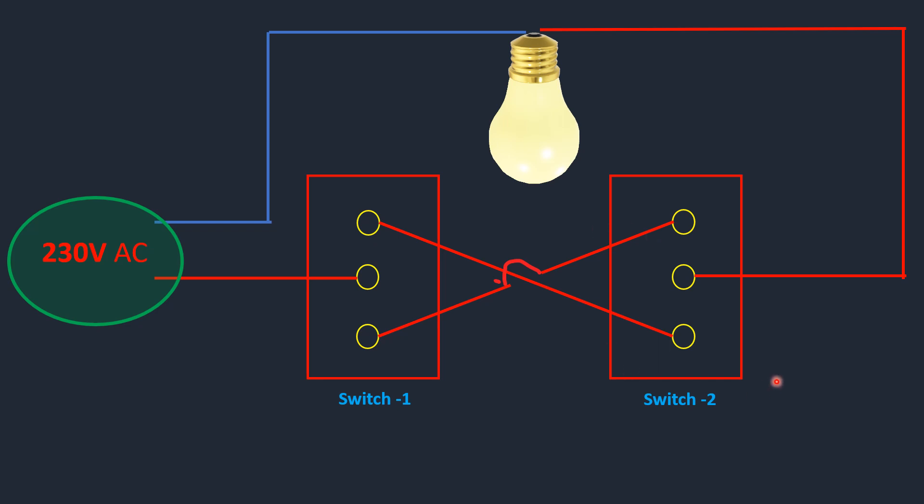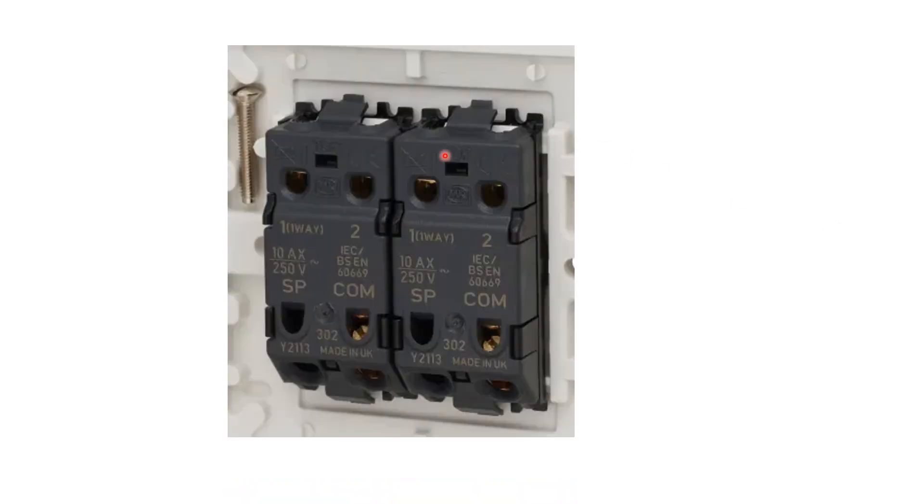This is how we draw it on paper or in theory. But when you look at an actual two-way switch, this is what it looks like. In this picture you see two gang—two-gang two-way switches. In two-way switches you see one, two, three, four terminals. So how are we going to connect?